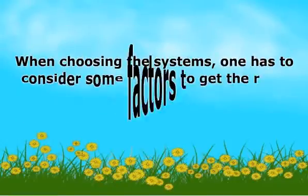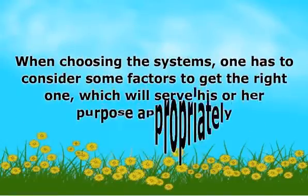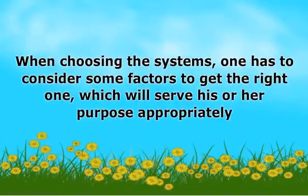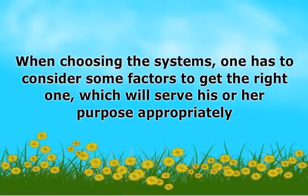Climate control systems should be installed in either rooms or cars as they make a place fresher and are recommended where you do not wish to open the windows. When choosing a system, one has to consider some factors to get the right one, which will serve the purpose appropriately. Some of the factors to consider are the size of the place, the design and the layout of the place where the system is to be installed.